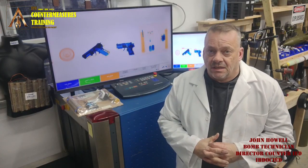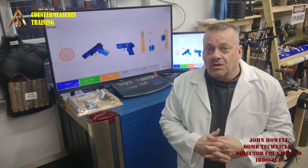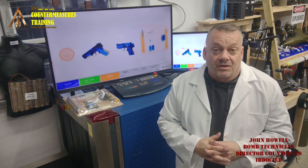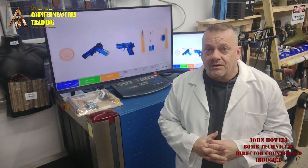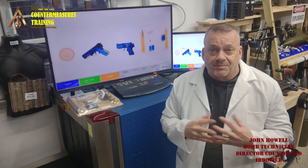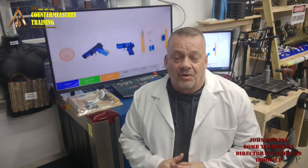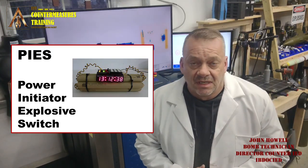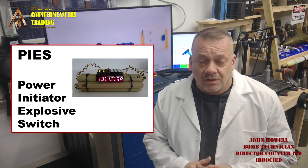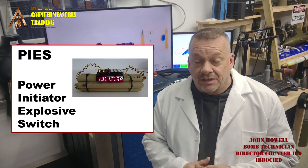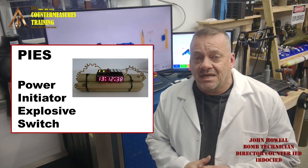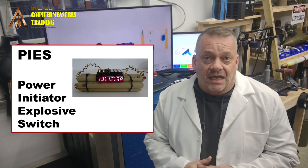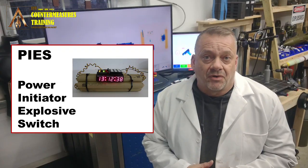When you look historically at training on IEDs, one of the acronyms they always used to explain what an IED was is PIES. PIES stands for Power, Initiator, Explosive, and Switch — and that was kind of the norm if you ever went to an IED class where they tried to teach you the different components.